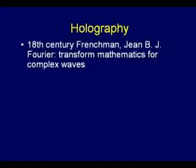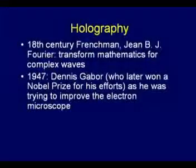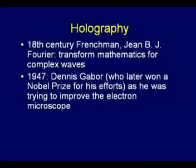An 18th century Frenchman created a thing called the Fourier Transform. Engineers are very familiar with this — to change things from the space domain to the frequency domain and back. We use it all the time in engineering for complex waves. In 1947, Dennis Gabor, who got a Nobel Prize for his invention, was trying to improve an electron microscope, which in those days was pretty primitive and deficient. He was working on that when he discovered what we know today as a hologram.